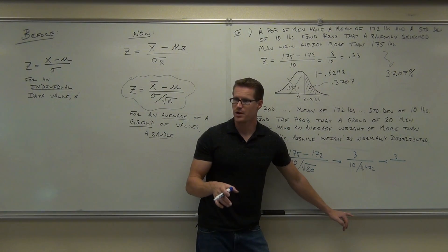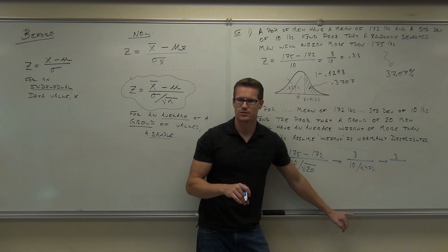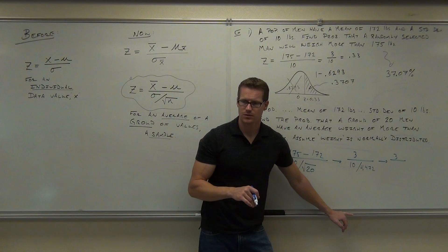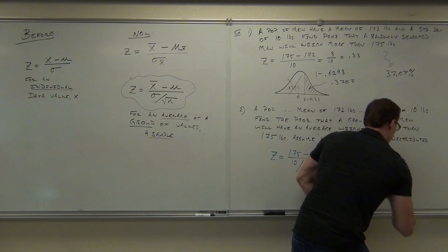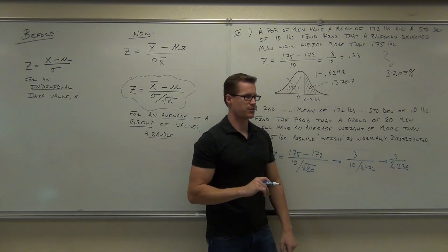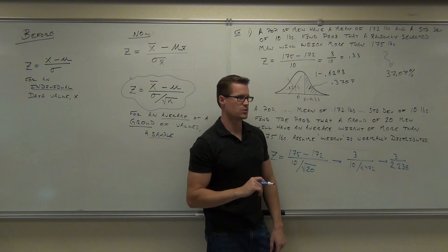Remember, the more you round, the more you're going to be off. So try not to round this at all. What's it going to give you if you do 10 divided by 4.472? 2.236. And lastly, give me that. 3 divided by 2.236. 1.341.